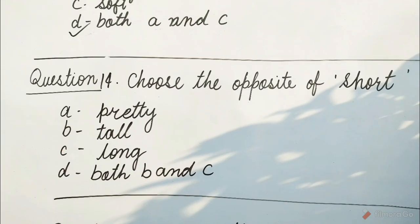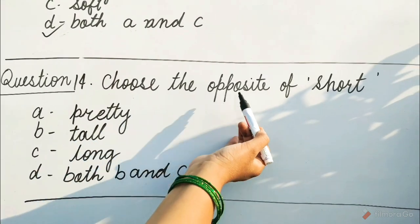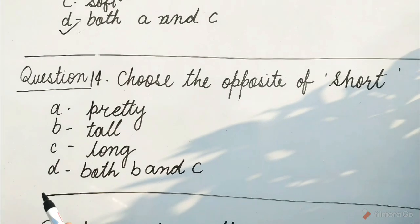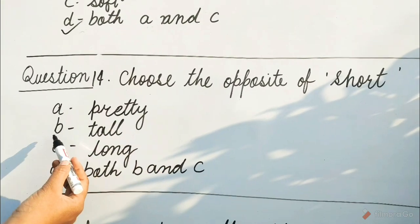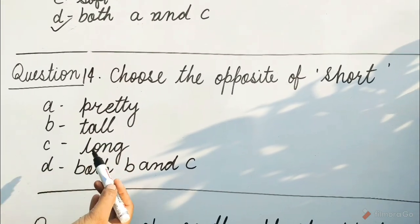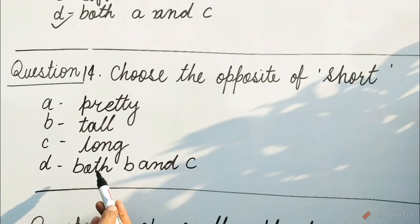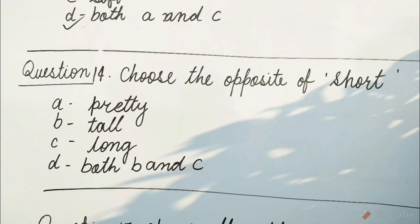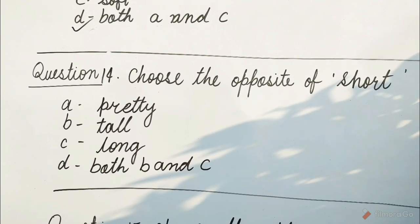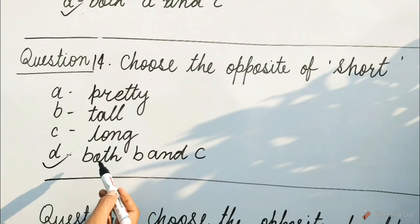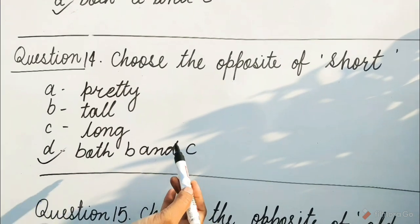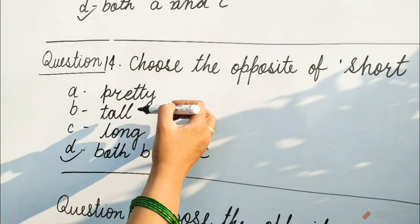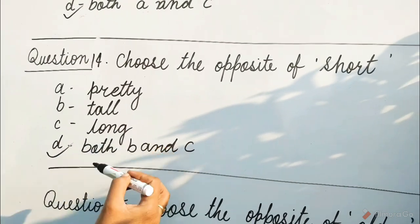Question 14: Choose the opposite of short. Options are A. Pretty, B. Tall, C. Long, D. Both B and C. Guess children, which option will be correct? Yes, it is D — Both B and C. Because the opposite of short is tall and long.